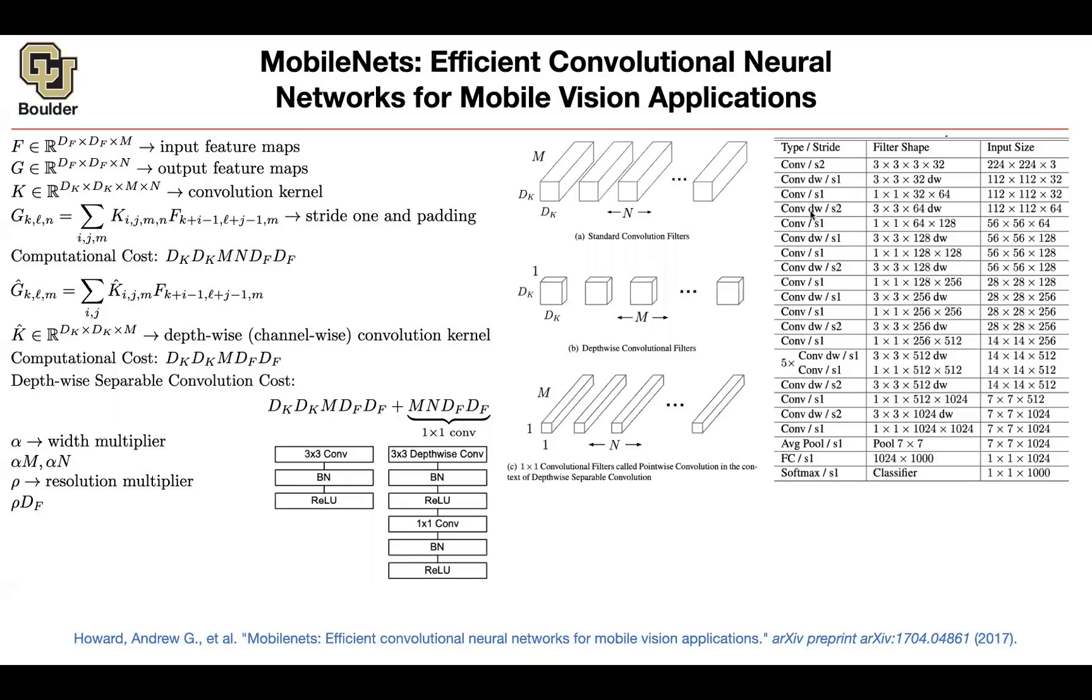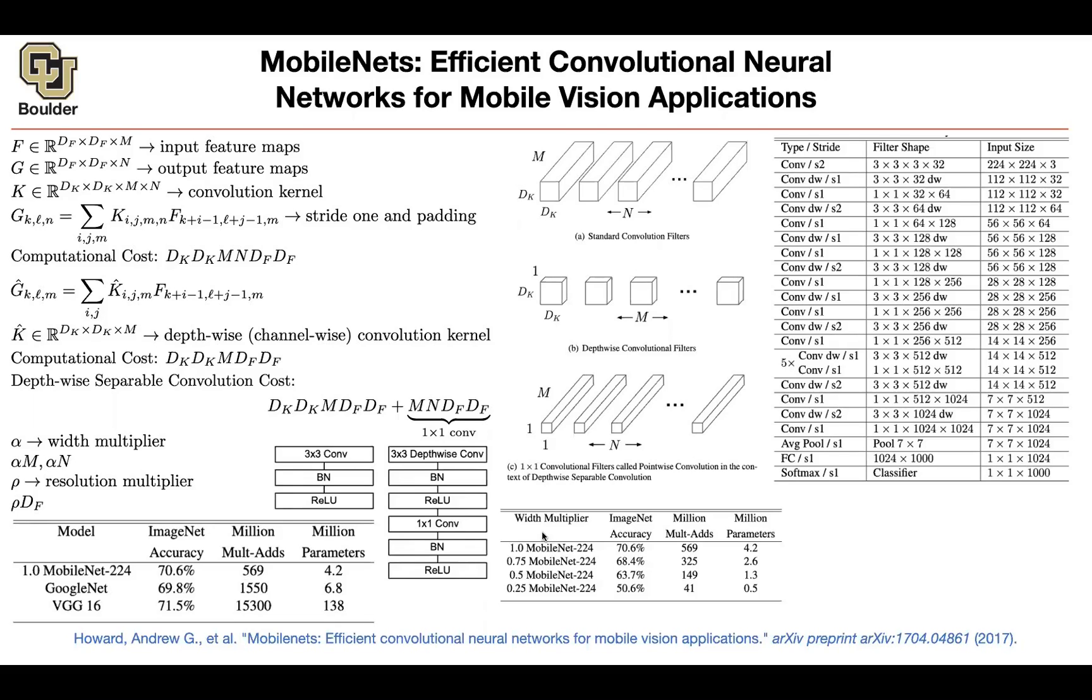But wherever you see DW in this structure is where you have these depth-wise separable convolutions. So there is one here, there is another one here, another one here, et cetera. And what does it save us? When you have MobileNet, and this one here corresponds to alpha and rho being one, so it corresponds to this structure. These are the accuracy that you get. And this is the number of multiplication and additions that you have to do. And this is the number of parameters in terms of millions. And actually the accuracy is comparable to GoogleNet and VGG 16 with fewer parameters and less multiplication and addition.